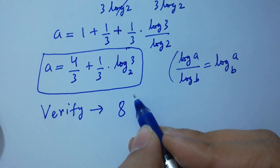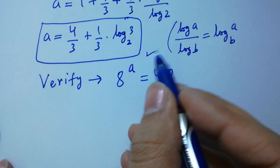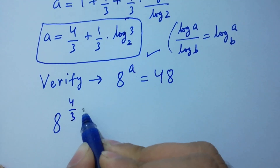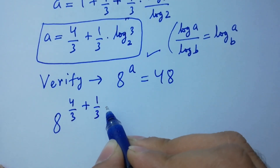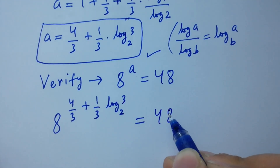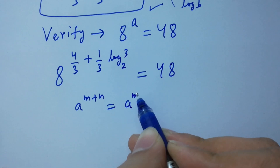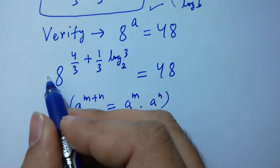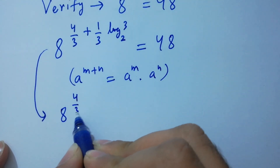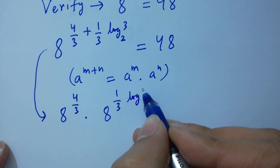Now verify: 8 to the power a equals 48. Put the value of a: 8 to the power (4 over 3 plus 1 over 3 log 3 to the base 2) equals 48. Using 8 to the power (m plus n) equals 8 to the power m times 8 to the power n, we get 8 to the power (4 over 3) times 8 to the power (1 over 3 log 3 to the base 2).